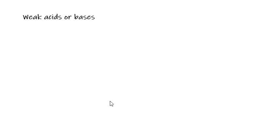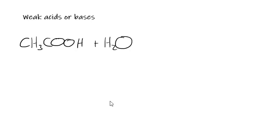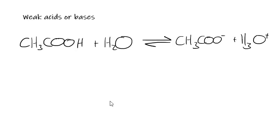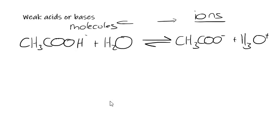Let's look at the different types of solutions and describe their conductivity. We could have a weak acid or a weak base. Ethanoic acid is our main weak acid. That reacts with water to form CH₃COO⁻ plus H₃O⁺. On this side of the equation we have ions — ions are charged particles — so the greater the concentration of these, the greater the electrical conductivity. Whereas on the reactant side we just have molecules with no charge, as you can see.